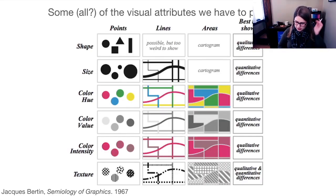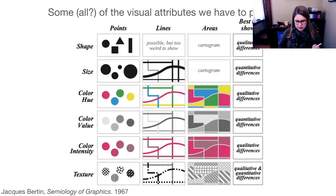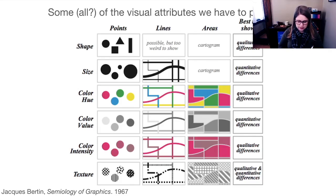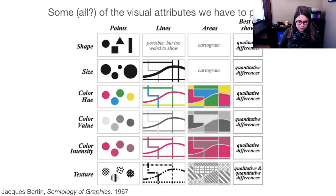There's this data visualization guy named Jacques Bertin, who wrote a famous book called The Semiology of Graphics. He outlined what he thinks are all of the visual attributes that we have to play with. So we could use shape, size, hue, value, and intensity of color; we could use texture; and we can have points, lines, and areas. There are different ways to visualize data that are better for different variable types. So we're going to be thinking a lot about these visual attributes.